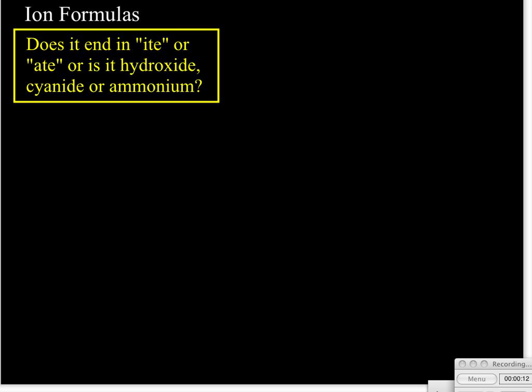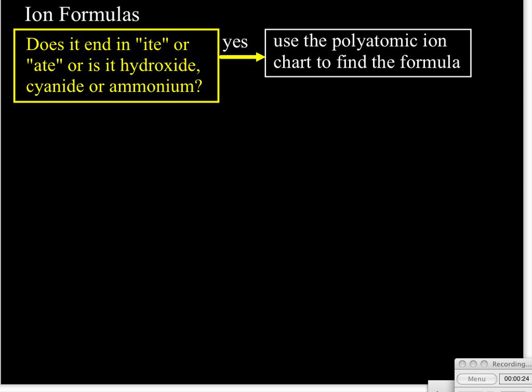So your first question when you look at the ion name is: does the name of the ion end in -ite or -ate, or is it hydroxide, cyanide, or ammonium? In these cases, if the answer is yes, they're all polyatomic ions. In my class, you'll go and find your polyatomic ion chart and look up the formula.